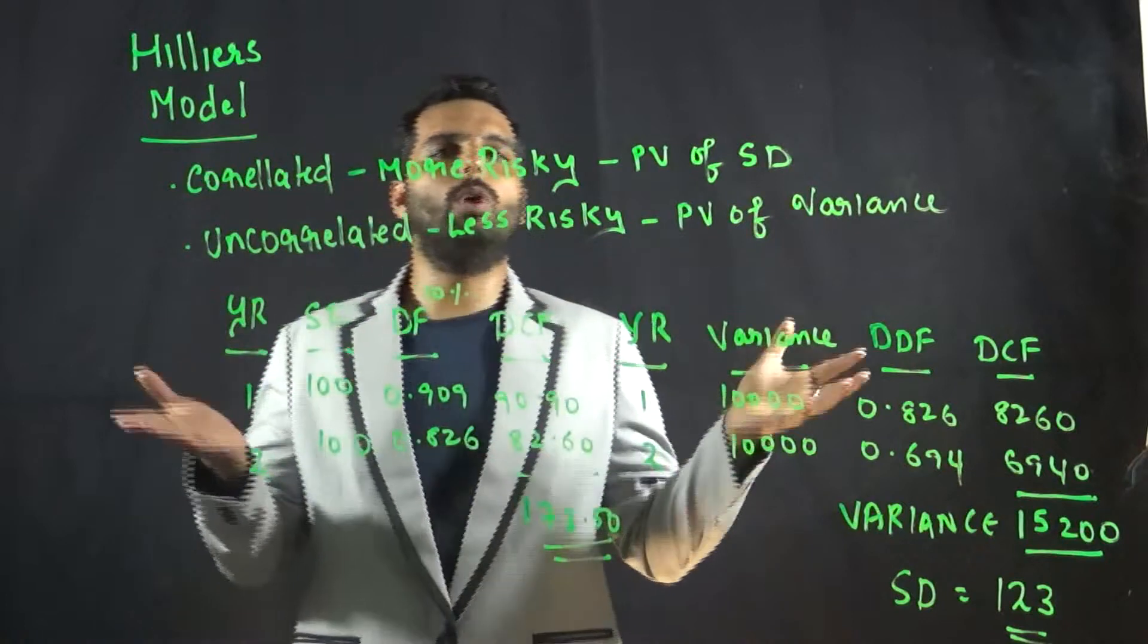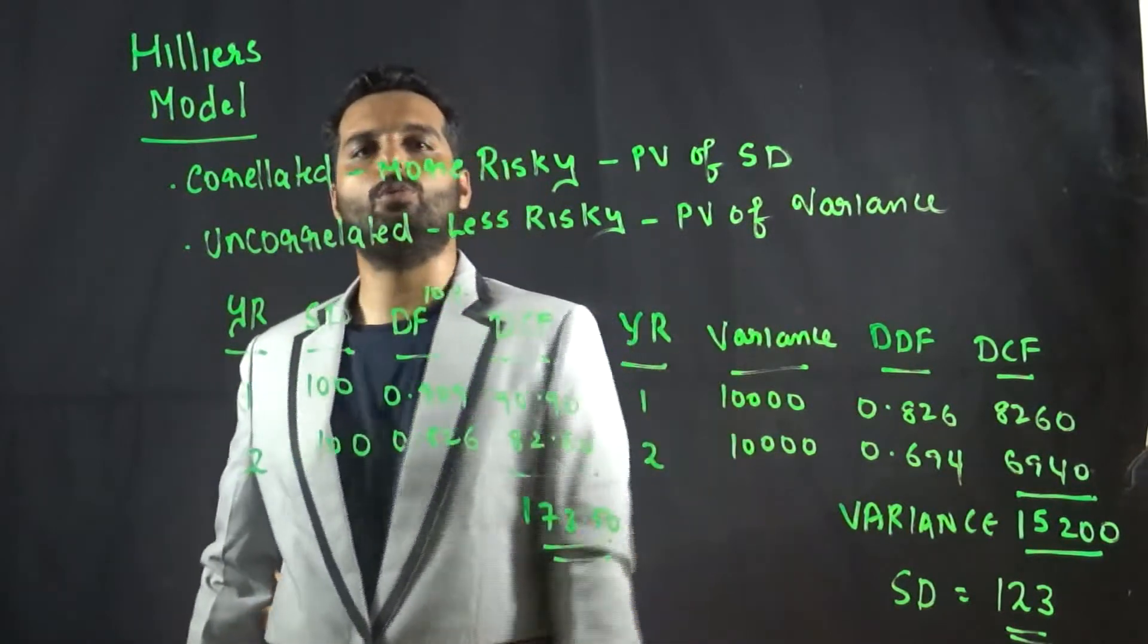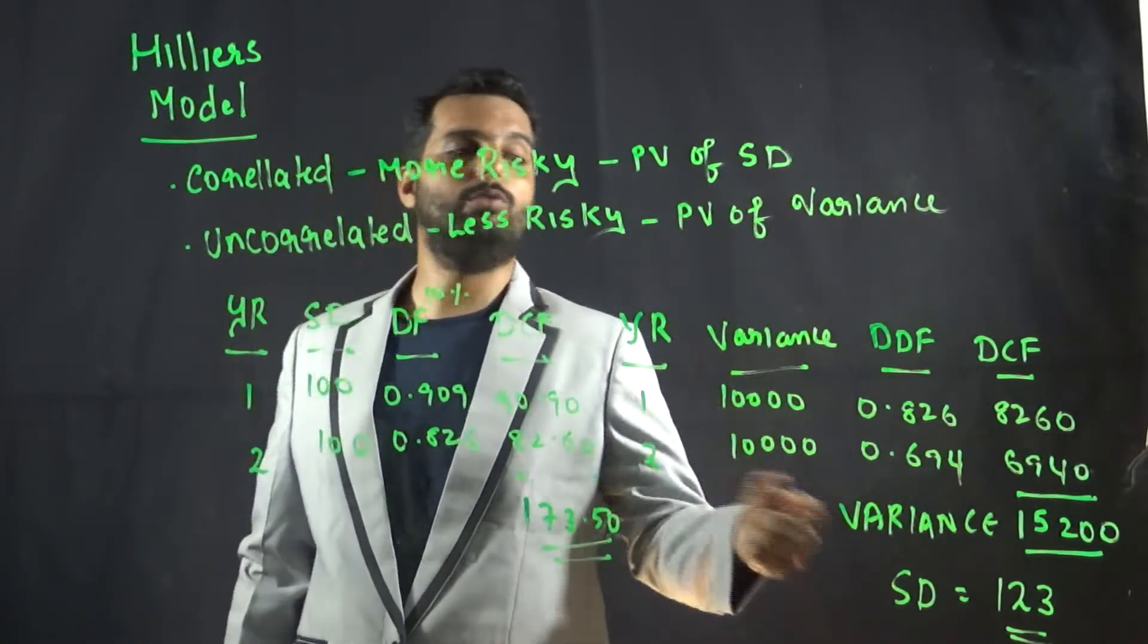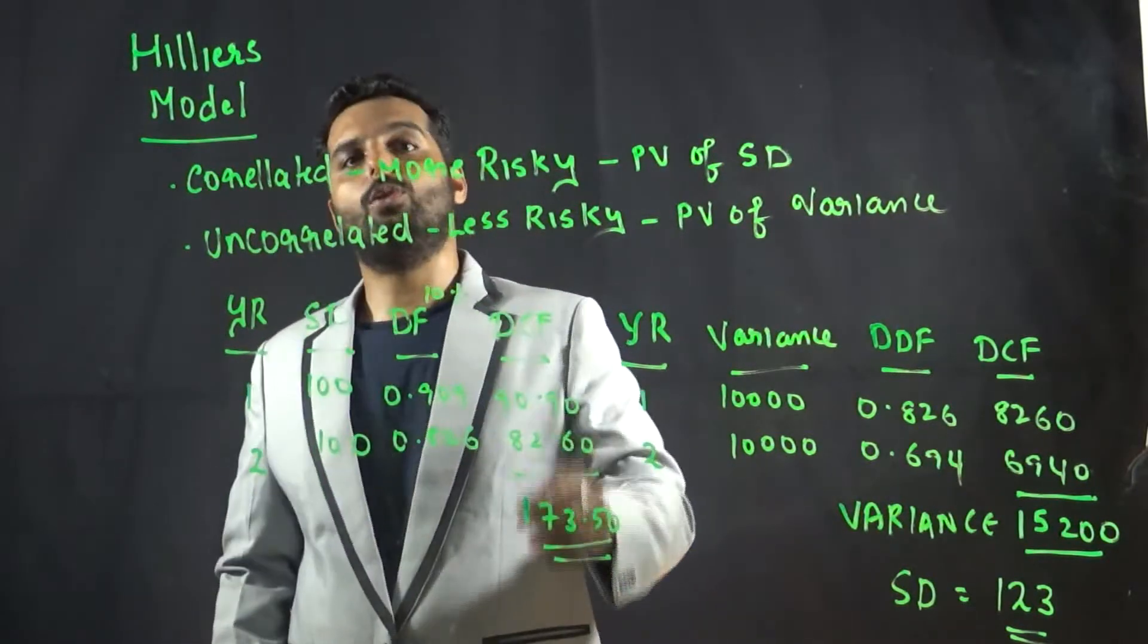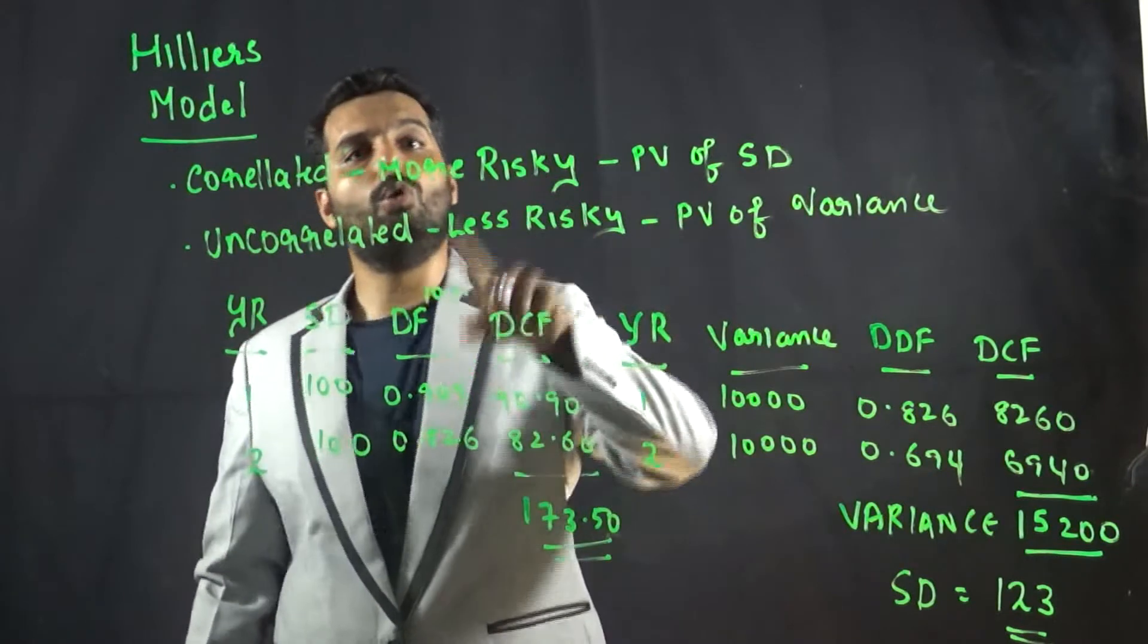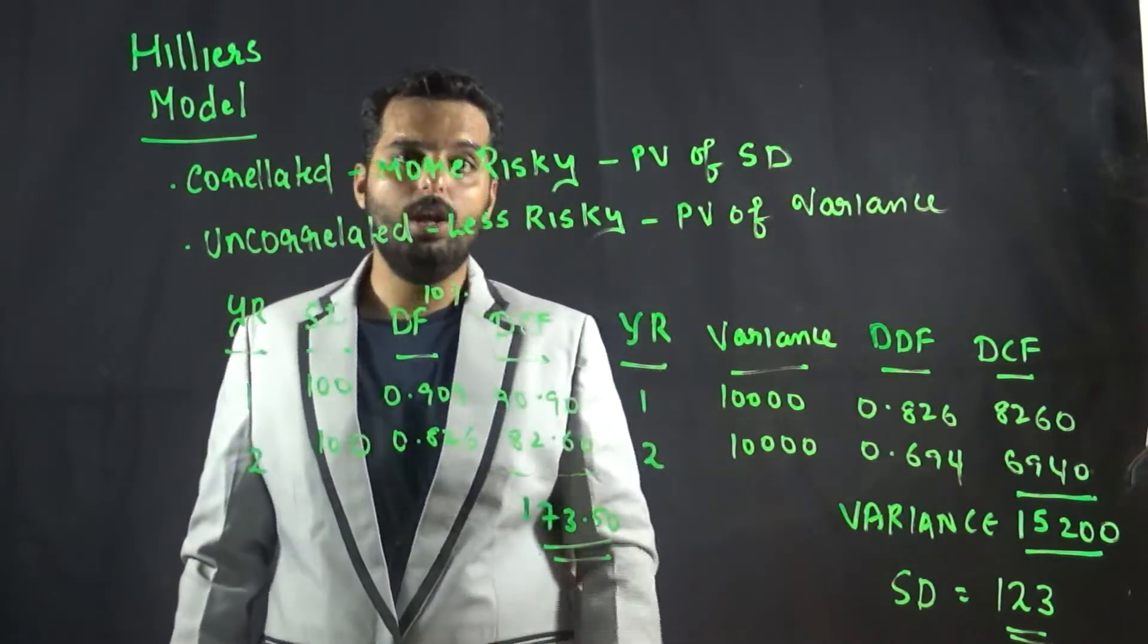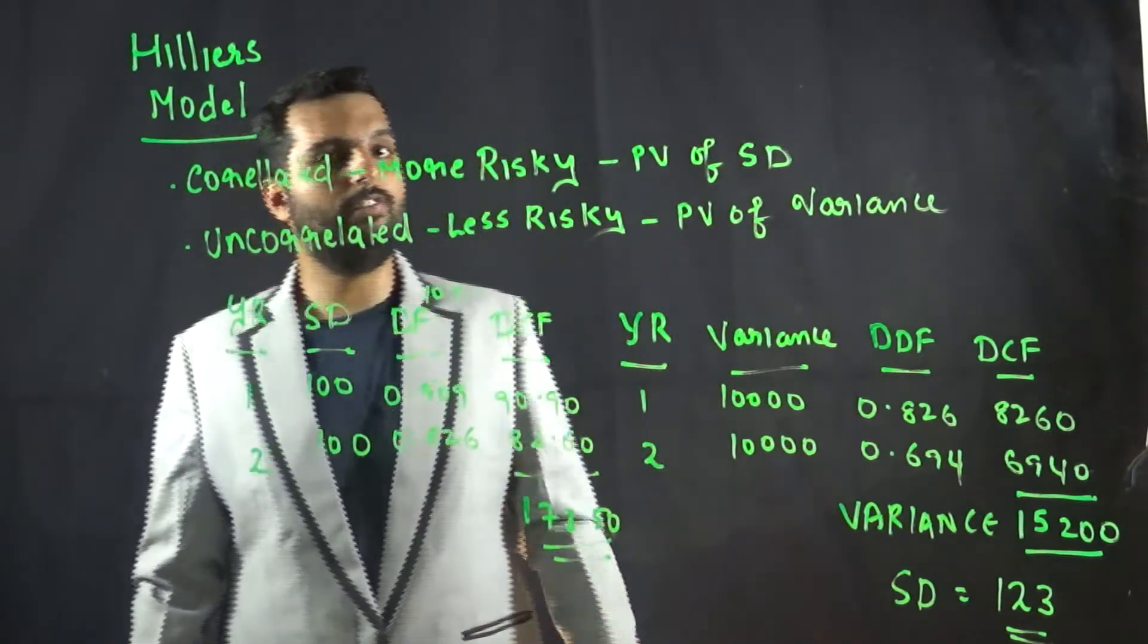So once we do like this, we get the number as 8260 and 6940, and the overall variance turns out to be 15,200, the square root of which is 123. Let me go back to the initial theory. Cash flows can be of two types: correlated or uncorrelated. Correlated cash flows are more risky, uncorrelated cash flows are less risky.